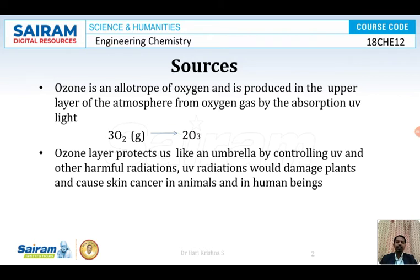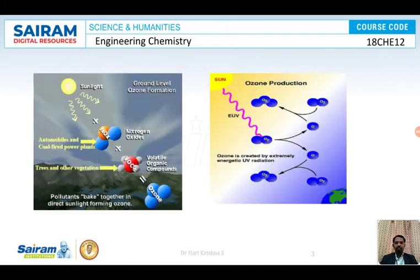If UV light enters into the earth, as discussed earlier, it causes skin cancer in animals and human beings, and causes early aging in plants also. So sunlight enters into the earth, and pollutants bake together in direct sunlight forming ozone. So if ozone concentration increases in the earth, we need to consider that.